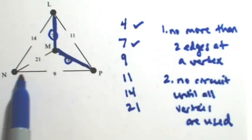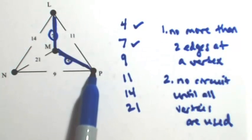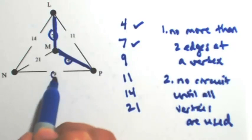Okay, the 9. If I were to use 9, that connects N to P. At P, I would only have two edges. So that's fine. And I don't have a circuit yet. So that's good.